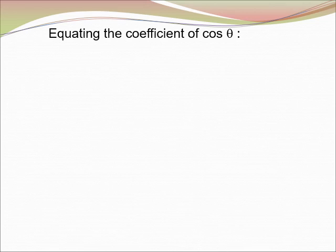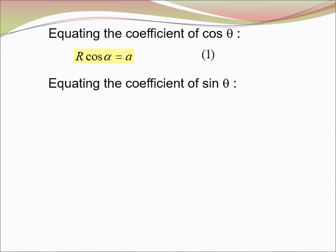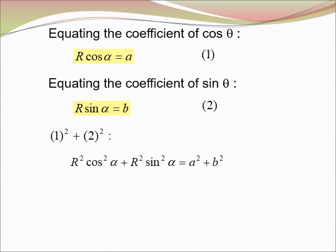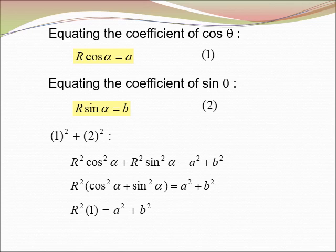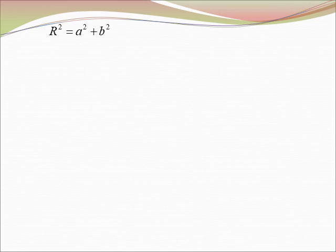Equating the coefficient of cos θ, we get R cos α = A (first equation). Equating the coefficient of sin θ, we get R sin α = B (second equation). Squaring and adding both equations, we use the identity cos²α + sin²α = 1, so R² = A² + B², or R = √(A² + B²).